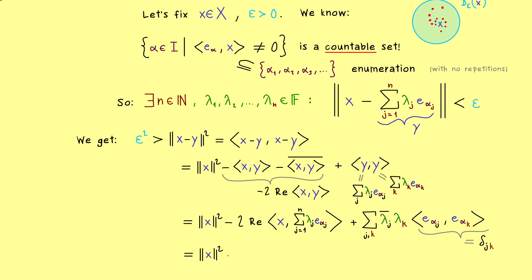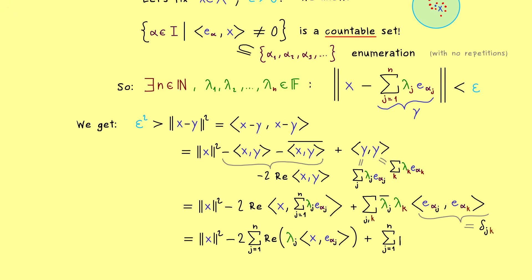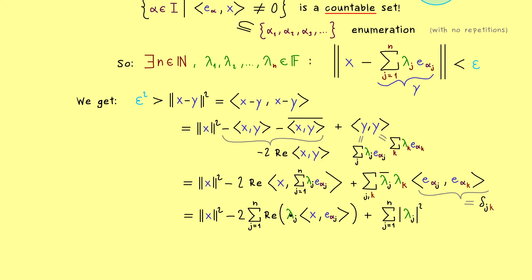Let's summarize what we still have: the norm of x squared, then a sum of the real part of lambda_j times the inner product ⟨x, e_{alpha_j}⟩, and the double sum on the right is now just a single sum with |lambda_j|² inside. We can simplify using one sum symbol, putting these two terms together, and arranging with a plus sign followed by minus two times the real part.